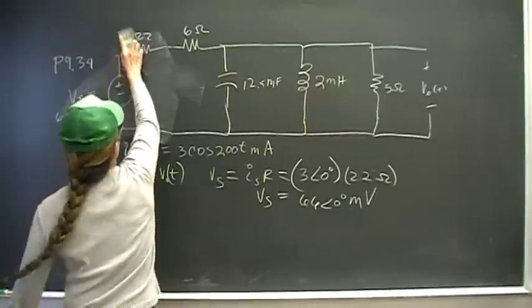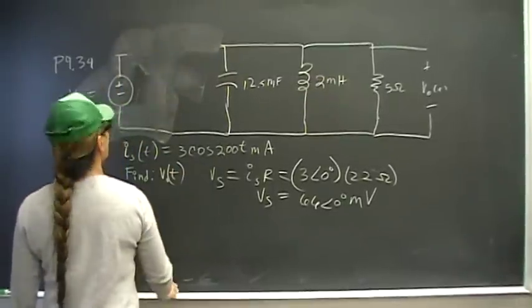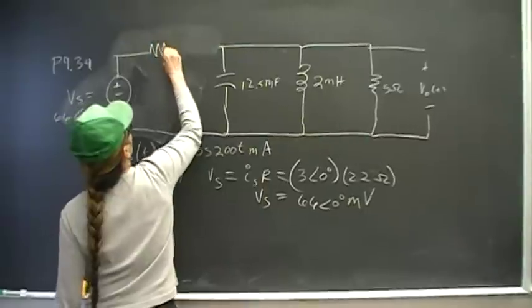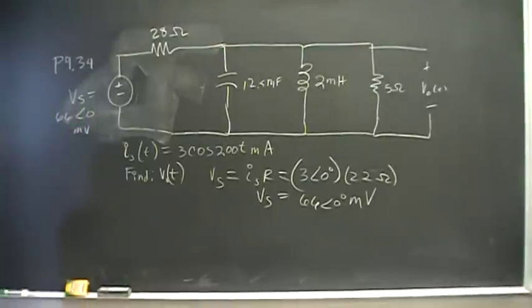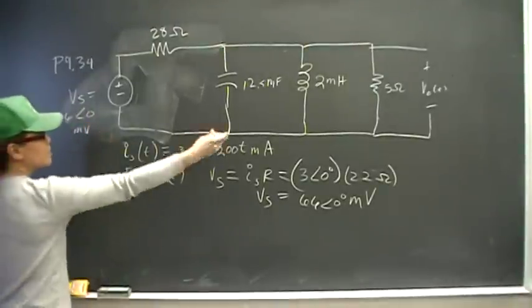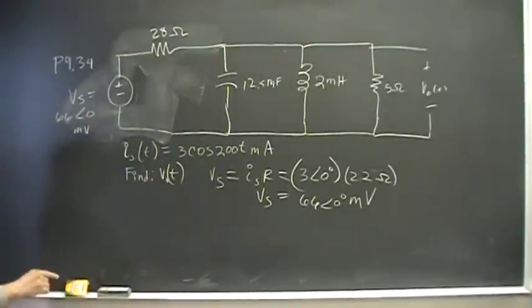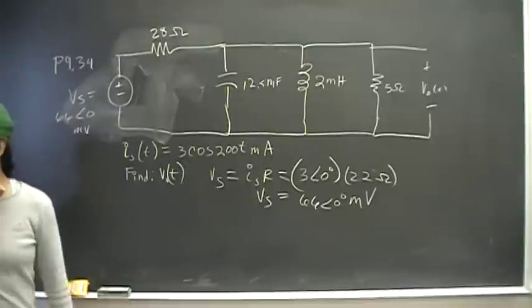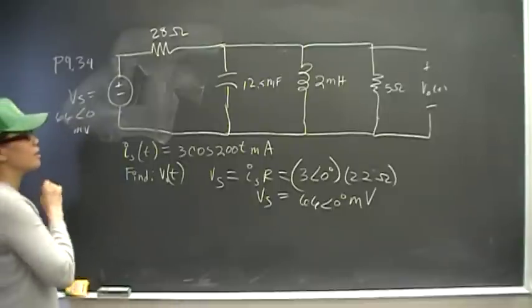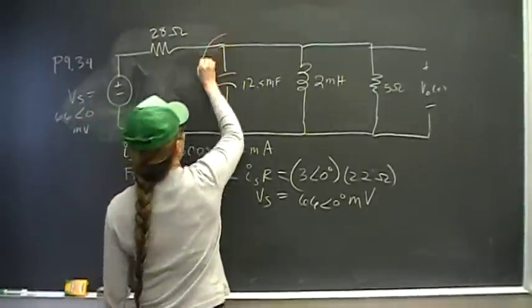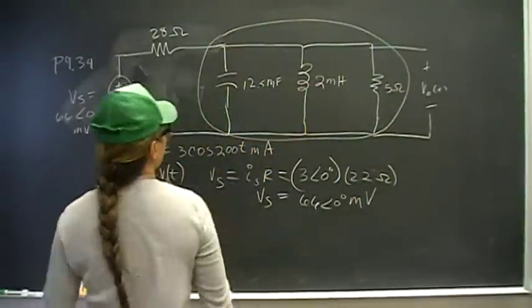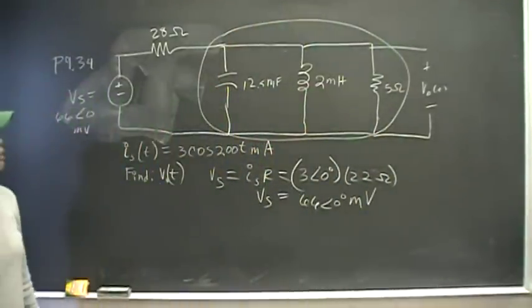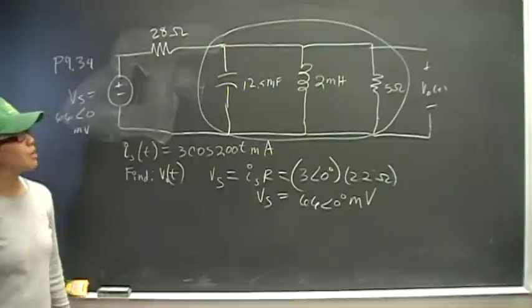Okay, we're getting closer. So now we have voltage in terms of voltage. So I'm looking at this and trying to think what should I do next. Notice that we have here all this junk. If I could reduce that junk—the three in parallel, the cap, the inductor, and the resistor—to a single impedance...